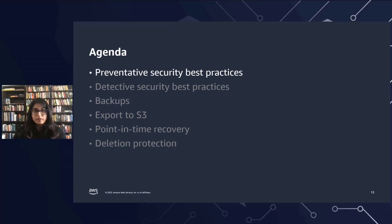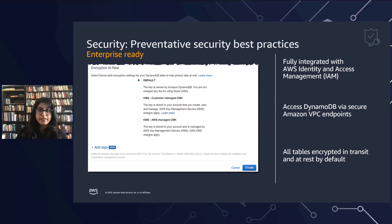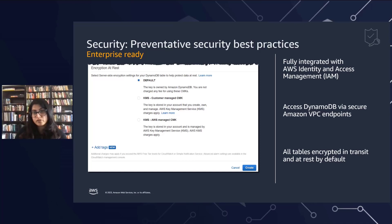Starting off with preventative security best practices. Preventative means you set these up in advance when creating your DynamoDB tables so that your data is secure and you're aware of everything happening with your tables. Encryption at rest is one of the key ones, supporting both AWS managed and customer managed encryption keys stored in AWS Key Management Service. Encryption at rest is fully transparent to users, with all DynamoDB queries working seamlessly with encrypted data — no application-level code change is needed. You can use your own specified keys or AWS managed keys.